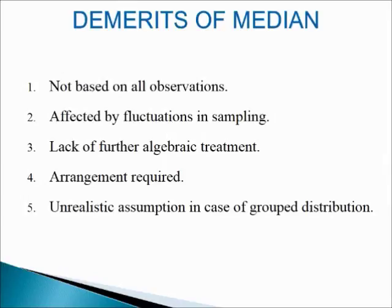Next, we come to demerits of median. First, not based on all observations: median being a positional average is not based on each and every item of the distribution. For example, the median of 10, 25, 50, 60 and 65 is 50. If we replace the observations 10 and 25 by any two values smaller than 50 and replace 60 and 65 with two values greater than 50, the value of the median will remain the same.